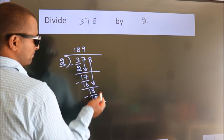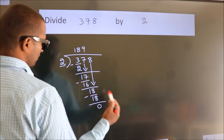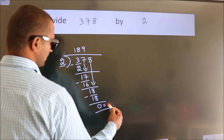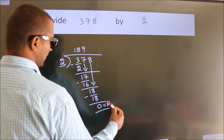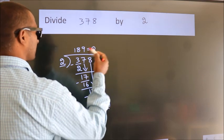There are no more numbers to bring down, so we stop here. This is our remainder, and this is our quotient.